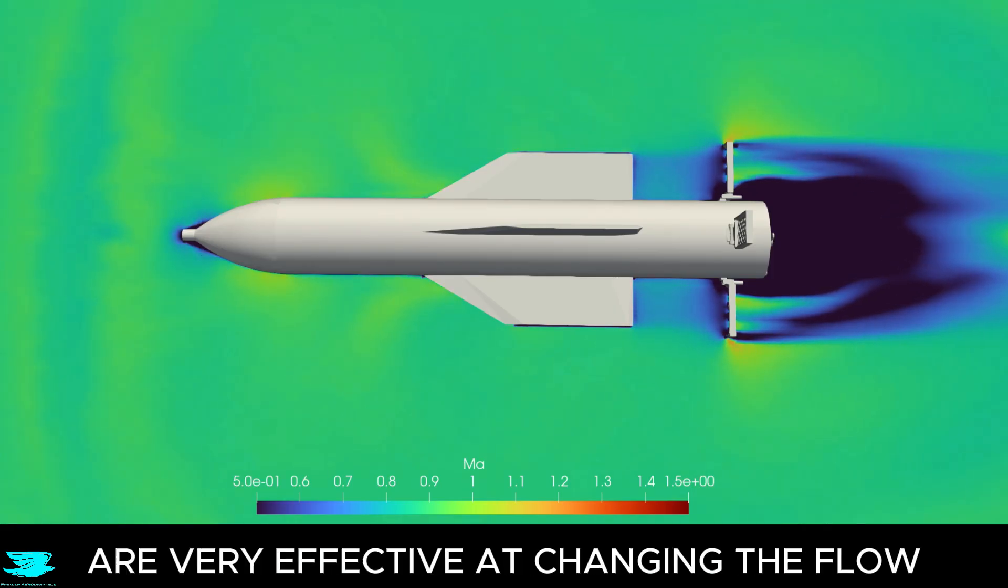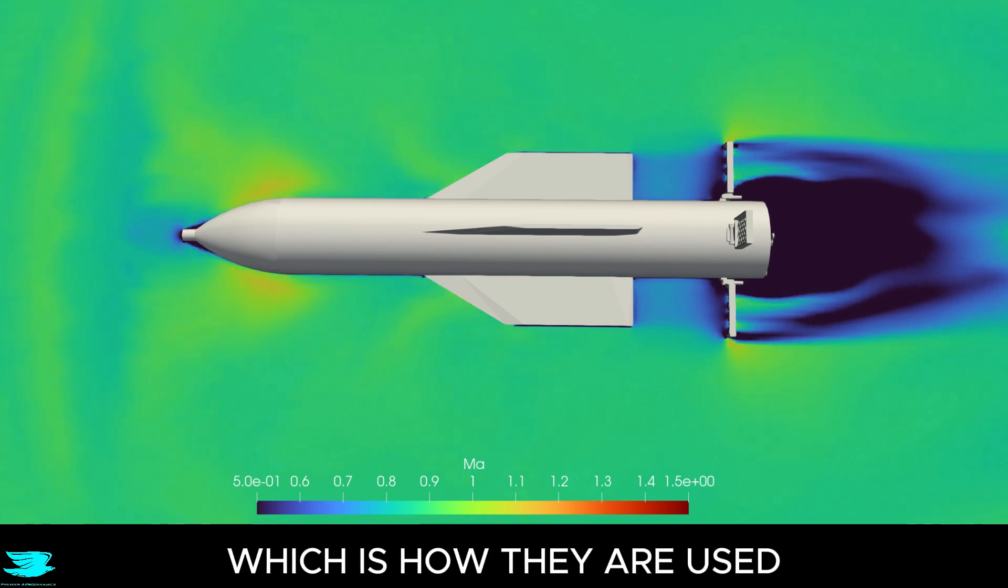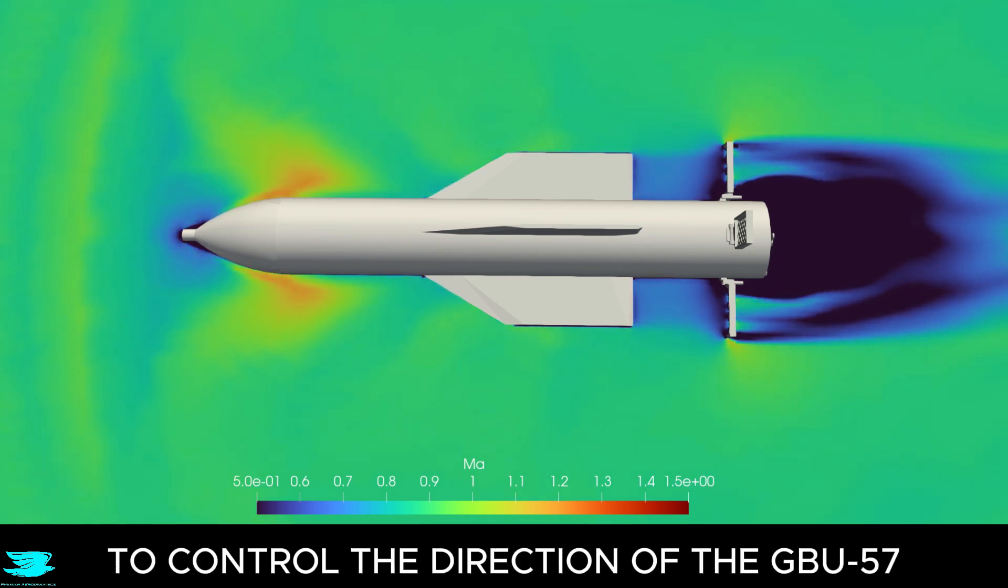That tells us that these plates are very effective at changing the flow, which is how they are used to control the direction of the GBU-57.